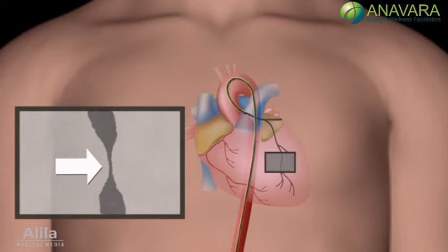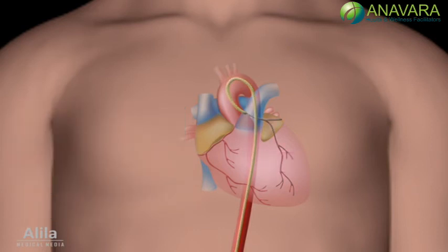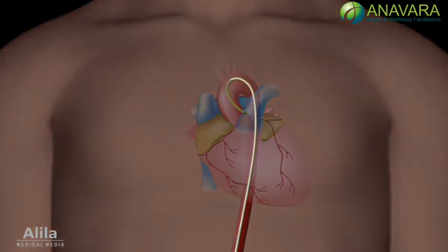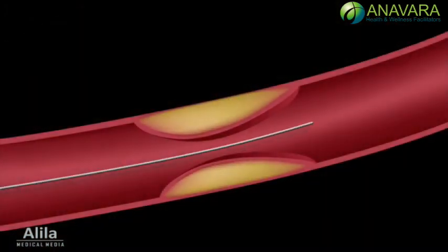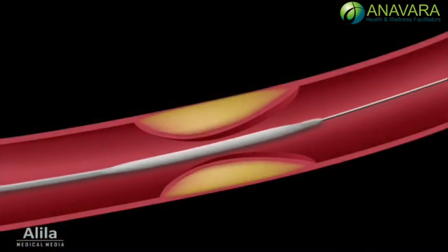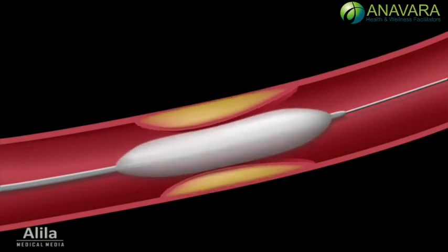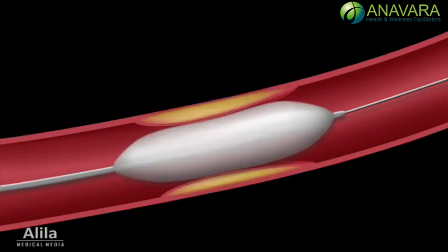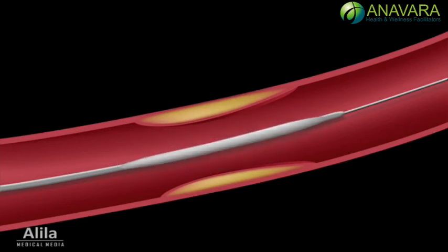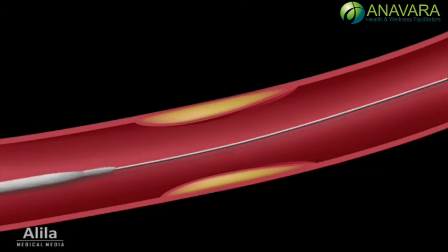After the location of blockage is identified, angioplasty can begin. A guide wire with a deflated balloon is inserted and pushed to the site of blockage. The balloon is inflated to crush the plaque. At the end of the procedure, the balloon is deflated and removed together with all catheters and guide wire.